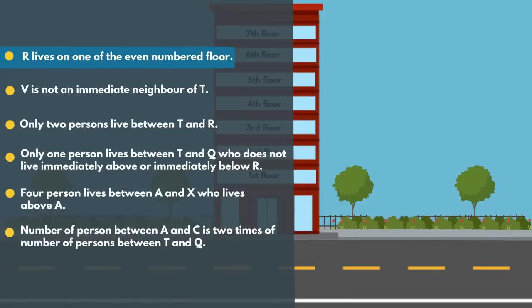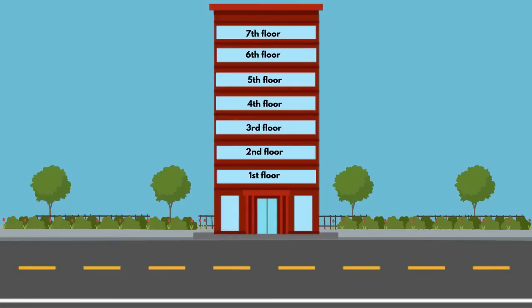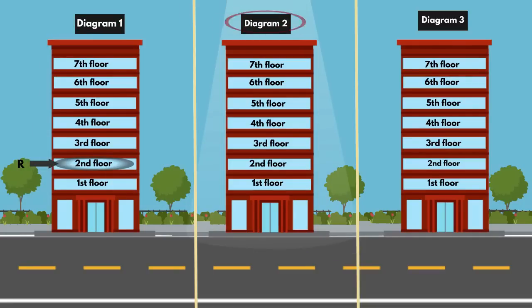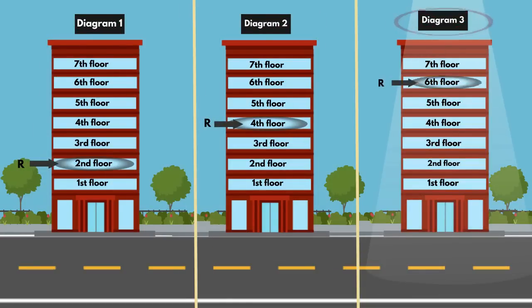Go to the first statement: R lives on one of the even numbered floors. Even numbered floors are the 2nd, 4th and 6th floors. So we get three possible diagrams: In Diagram 1, R lives on the 2nd floor. In Diagram 2, R lives on the 4th floor. In Diagram 3, R lives on the 6th floor.